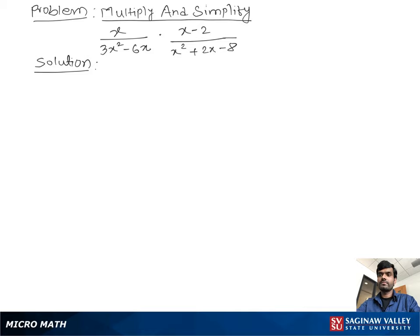Multiply and simplify: x over 3x² minus 6x times x minus 2 over x² plus 2x minus 8. Let's write the problem again: x over 3x² minus 6x times x minus 2 over x² plus 2x minus 8.